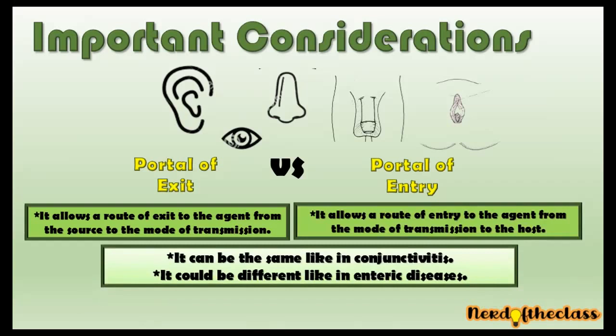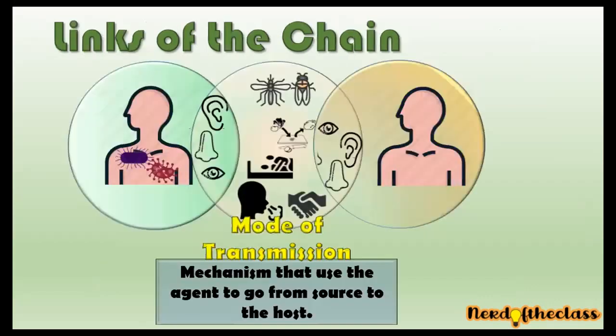The portal of exit and portal of entry could be the same, like in conjunctivitis where the ocular mucosa serves both. But they could be different, like in enteric diseases: in enteric diseases, the portal of exit is the anal cavity, and the portal of entry is the buccal cavity.